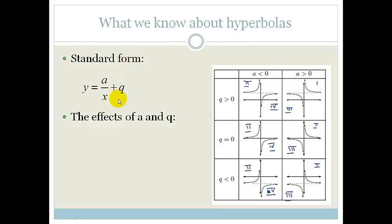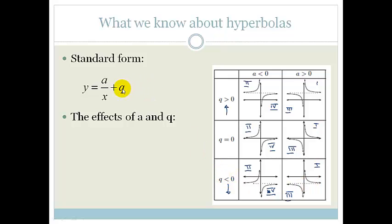If we add the q in, it actually shifts your graph vertically. So if you've got a positive q, it's going to shift your graph up, and your asymptote, which was the x-axis when q = 0, is now at some positive y value. And that asymptote is equal to q.